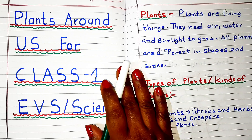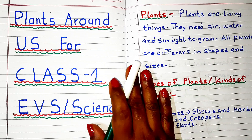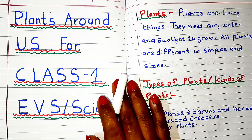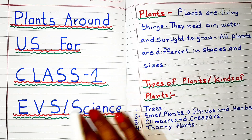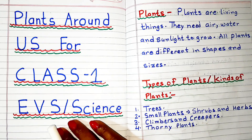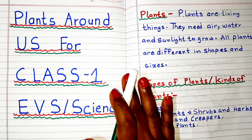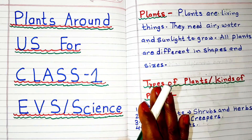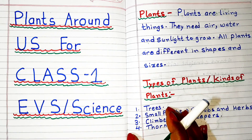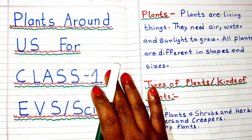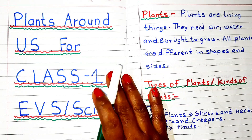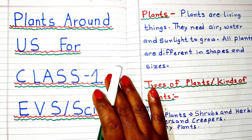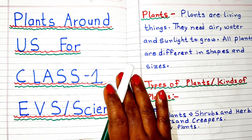Hello everyone, welcome to my channel Simple Easy Learning. Today's video topic is Plants Around Us for Class 1 in subject EVS or Science. In this video we will learn what are plants and types of plants or kinds of plants. In the previous video we learned about Animals Around Us — if you haven't watched those videos, the link is in the description.